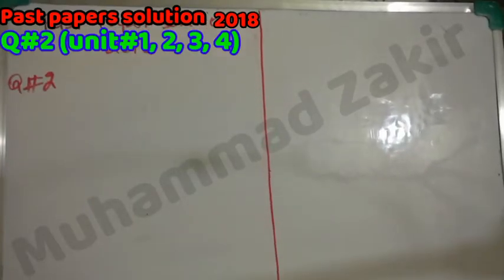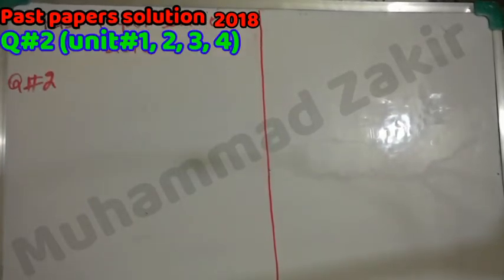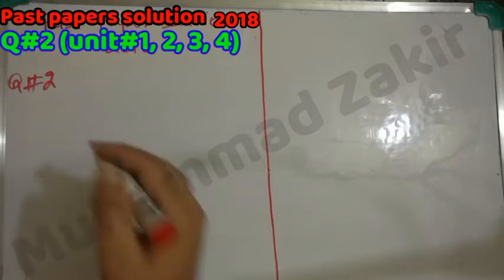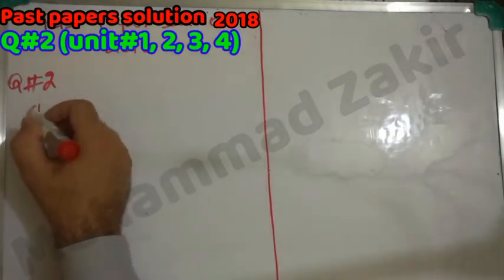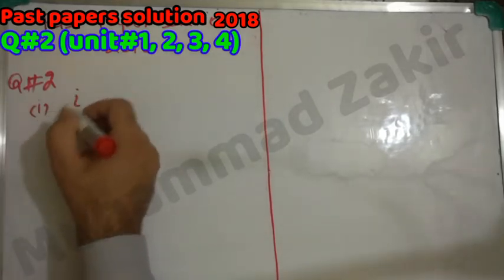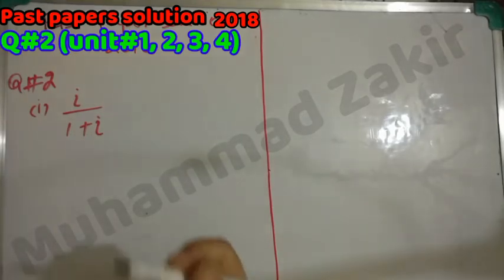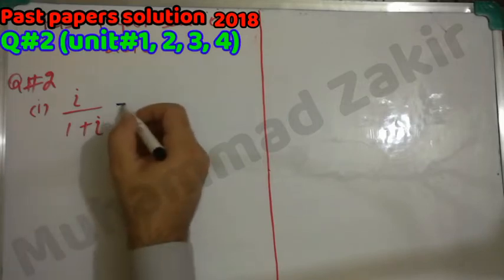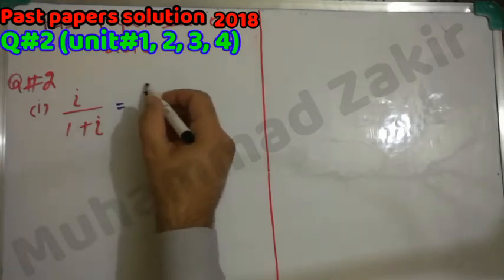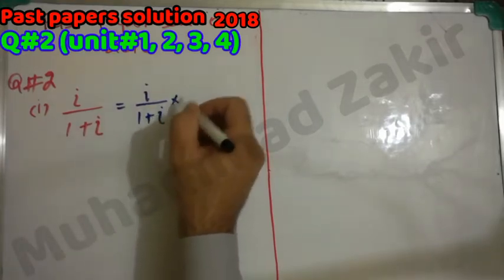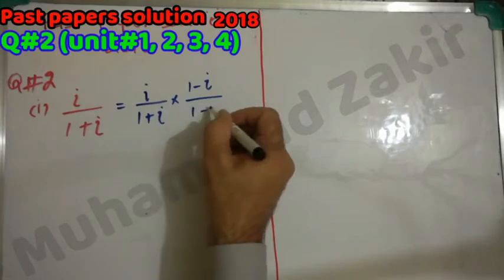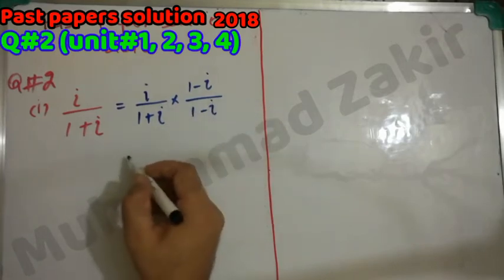Question number two: separate into real and imaginary parts. First, iota divided by (1 + iota). We will multiply and divide by the conjugate of the denominator.